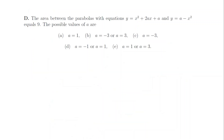1d. The parabolas intersect at x equals 0 and x equals minus a. We need to consider the cases a less than 0 and a greater than 0 separately. If we do the integral for the difference between the parabolas, we find that the area is plus or minus a cubed over 3, so a has to be 3 or minus 3, and the answer is b.